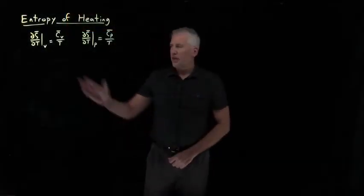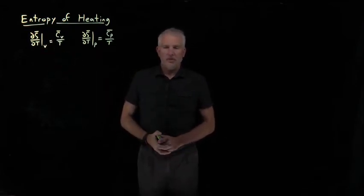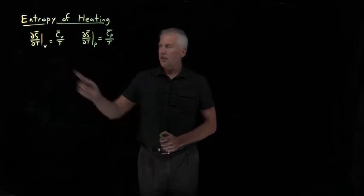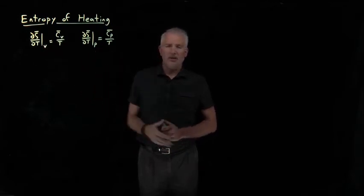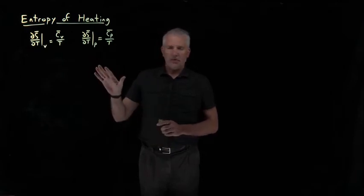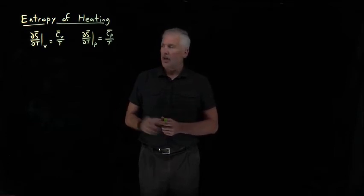All right, so we have two expressions that tell us how to calculate the rate at which the entropy is changing as we increase or decrease the temperature of something at either constant volume or at constant pressure. These are going to be useful. We've had equations before, we've calculated the change in entropy upon heating of a gas, an ideal gas in particular, but these equations apply to any substance whatsoever.